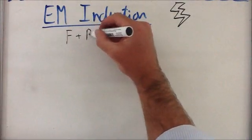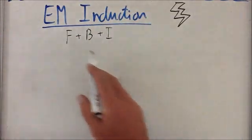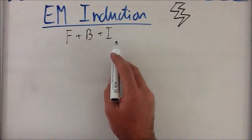We have a force, we have a magnetic field, and we have an electrical current. And if we have any two of these, we can produce the other one.